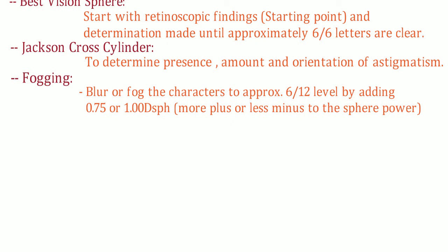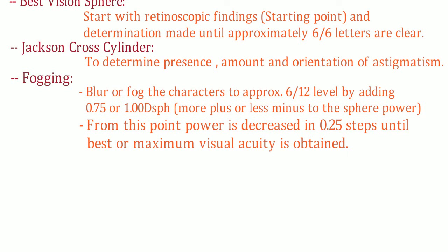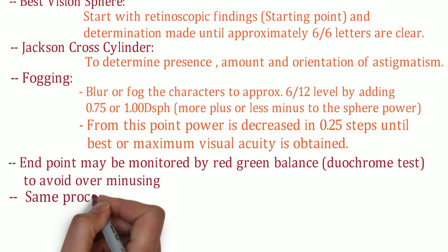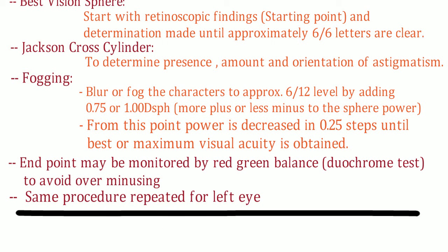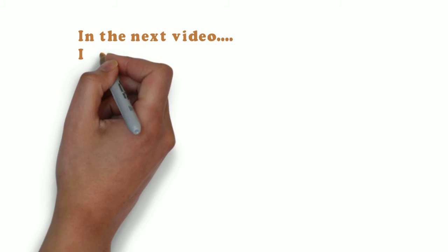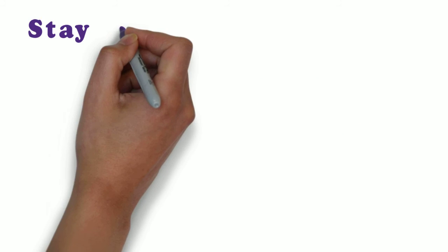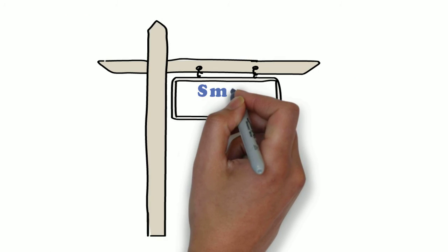Then fogging: blur or fog the characters to approximately 6/12 level by adding +0.75 or +1 diopter spherical. From this point, power is decreased in 0.25 steps until maximum visual acuity is obtained. The endpoint may be monitored by red-green balance, which is the duochrome test, to avoid over-minusing. The same procedure is repeated for the left eye. In the next video I will discuss about the fogging method of binocular refraction. Stay with Smart Optometry.